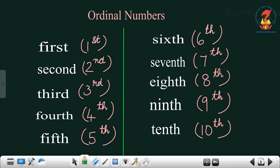Now look at the board — here you can see the spellings of the ordinal numbers. F-I-R-S-T is 'first'. Look at the last two letters: S-T. So we write 1 and ST on the top, and it is read as 'first'. Next is S-E-C-O-N-D — 'second'. The last two letters are N-D, so we write 2 and ND on the top. Next is T-H-I-R-D — 'third'. We write 3 and RD on the top.